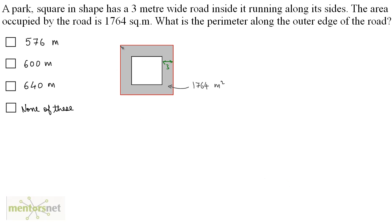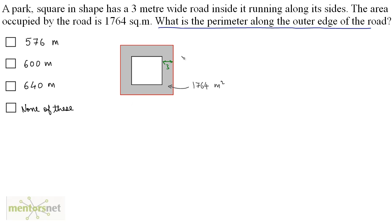You have a situation like this. The area enclosed by this red square is the park, and the shaded region is the road which is 3 meters wide and it is running along the sides of this park. You have been given the area of this shaded region and that's 1764 square meters. You have been asked what is the perimeter along the outer edge of the road — that means the perimeter of this red square.